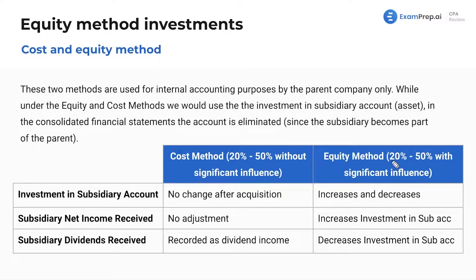The key difference between the two: the cost method is basically just the fair value method because you don't have significant influence — maybe you own between 20% and 50% of the company, but there's no significant influence. The equity method is when you own between 20% and 50% and you do have significant influence. Criteria for significant influence include being able to put a member on the board of directors, influence the company's operations, or exercise some sort of control over the company.